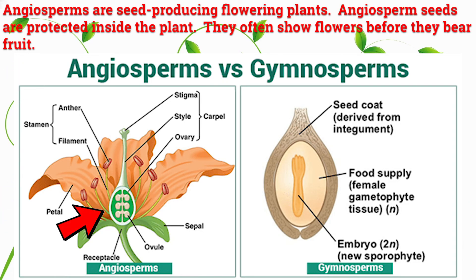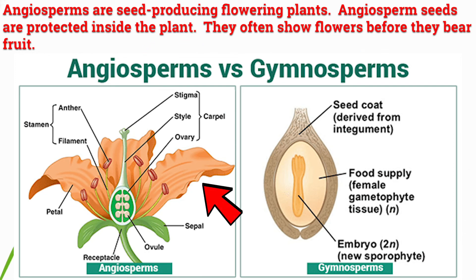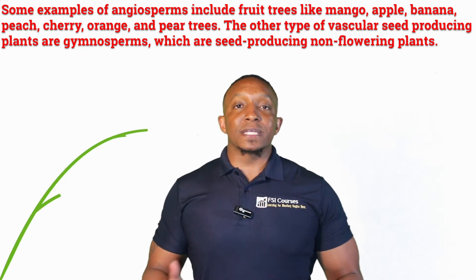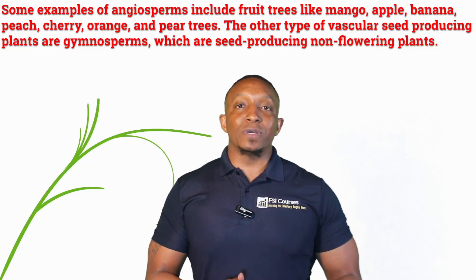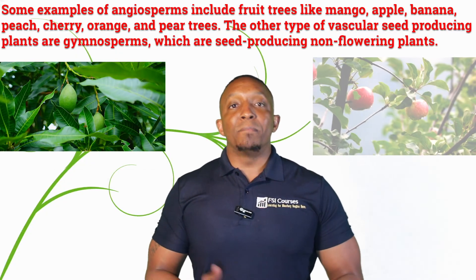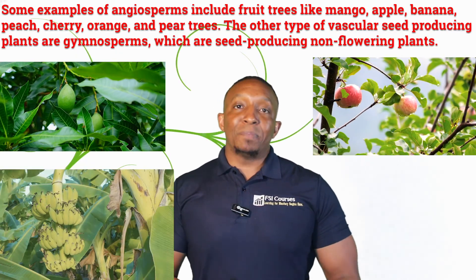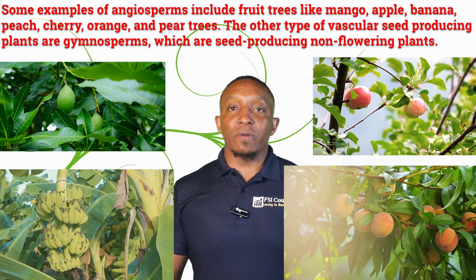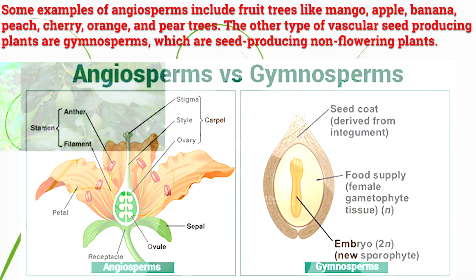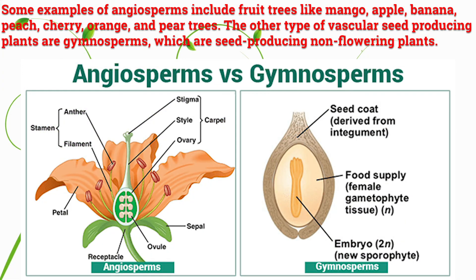Angiosperms are seed-producing flowering plants. Angiosperm seeds are protected inside the plant, and they often show flowers before they bear fruit. Some examples of angiosperms include fruit trees like mango, apple, banana, peach, cherry, orange, and pear trees.